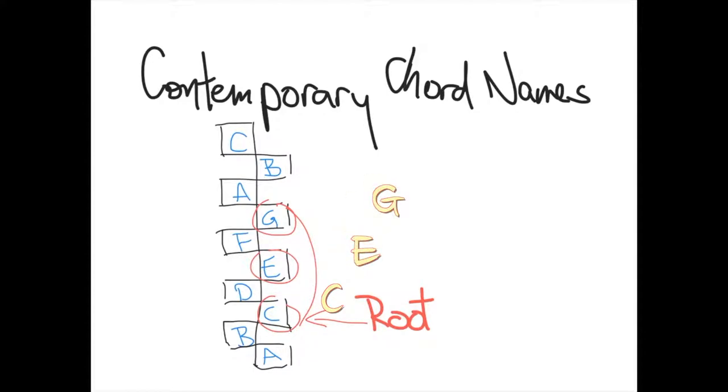Every chord has a root. Usually it's the bass note that we call, and we name the chord after it. So that's the first part of the chord's name: a C, a B flat, an F sharp, an A. This is the primary identifier, the root to the chord.